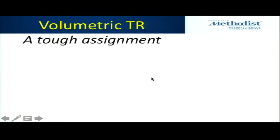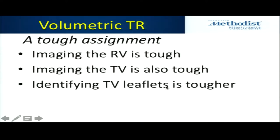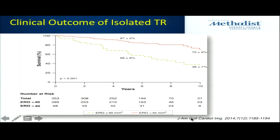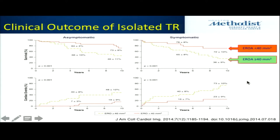Quantitating TR is a tough assignment, partly because it's tough to image the RV and the individual tricuspid leaflets. But TR severity is important to quantify. This paper looked at survival over time benchmarked against TR severity quantitation. An effective orifice area greater than 0.4 cm² shows a significant difference in survival up to 10 years — they look different even at one year. So you can prognosticate survival based on TR severity quantitation.